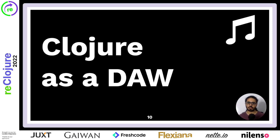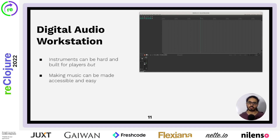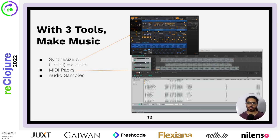Which brings me to Clojure as a DAW — a digital audio workstation. Workstation: an environment. And this view comes from two ideas — that instruments can be hard and built for players and professionals — but making music, the act of creating something for others to hear, to express yourself, can be made easy, can be made accessible, and most importantly, fun. In the music world, you can use three tools: synths, MIDI packs, and audio samples.